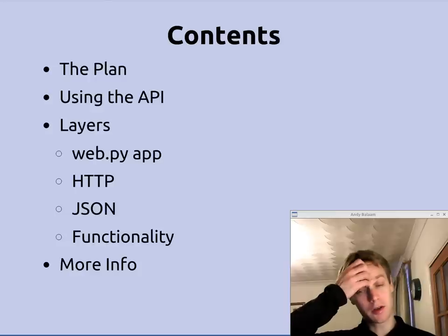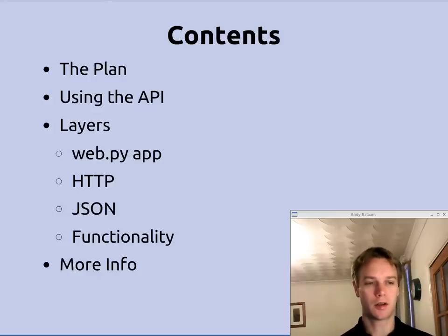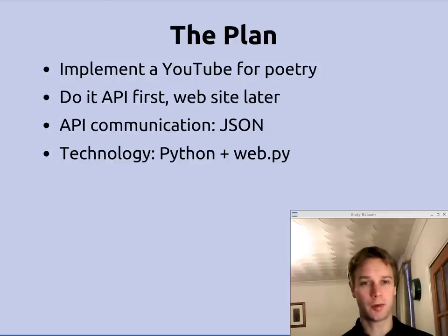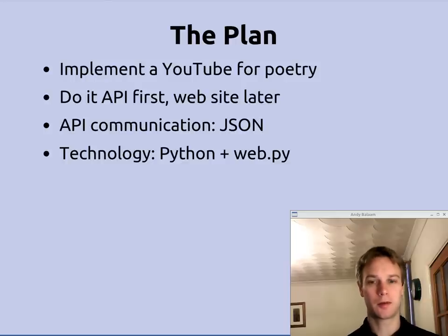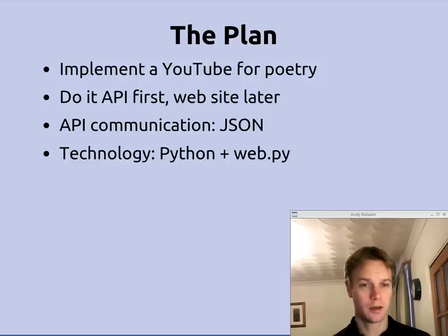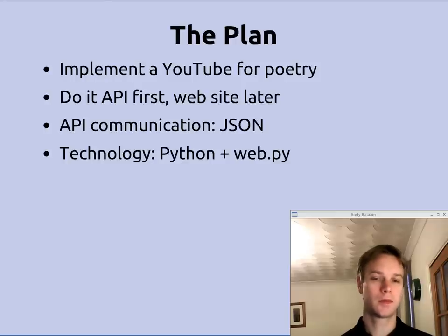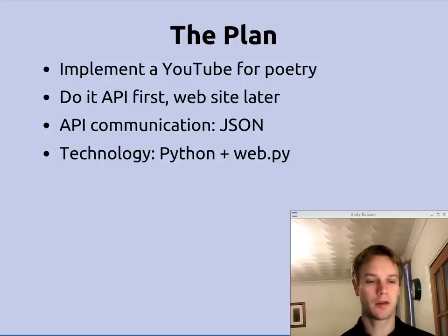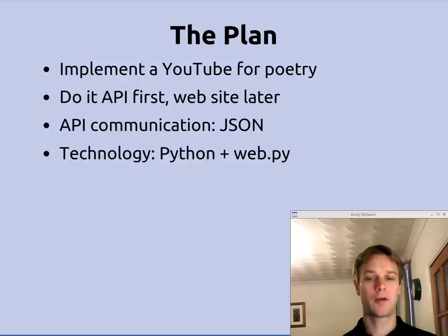So the plan: we're going to make a very small REST API that will serve as an example, and we'll be changing the code as we add features later. I'll show you how to use the API to drive home the concepts, then we'll look at the code layers. The project is a kind of YouTube but for poems. We'll use JSON for data in and out, and Python with the web.py library, which is simple enough to get out of our way and let us think about REST.